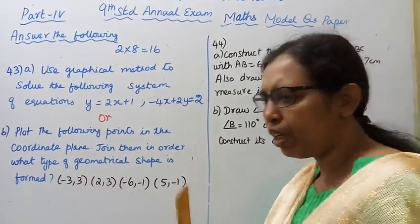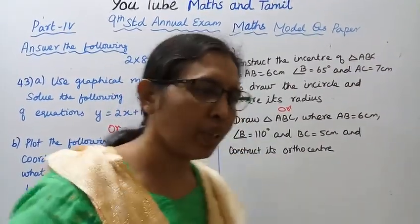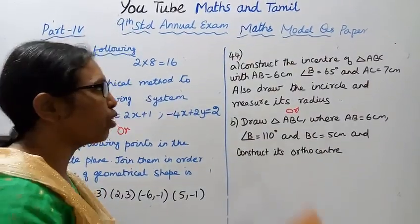Join them in order, and what type of geometrical shape is formed? You need to mention that. For the three main steps, you get eight marks full.